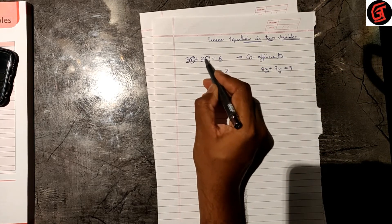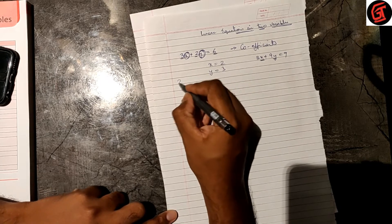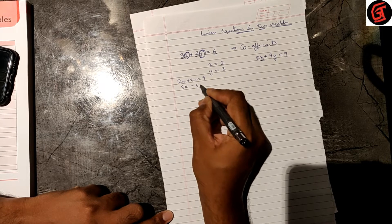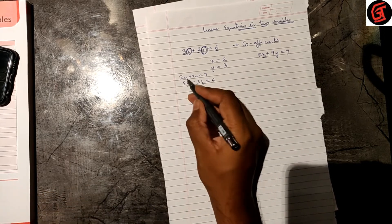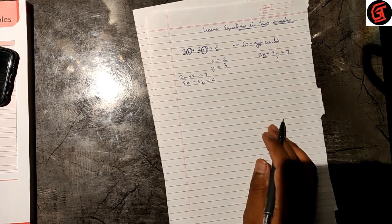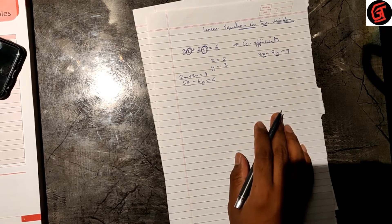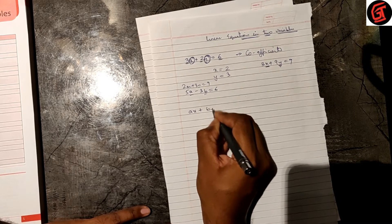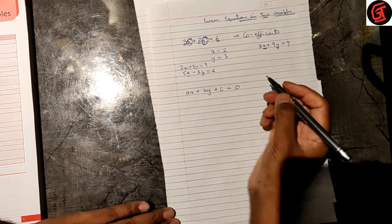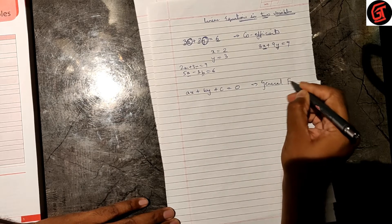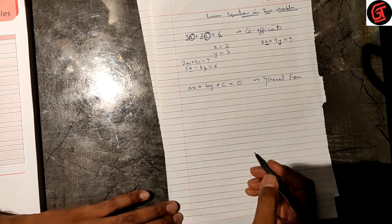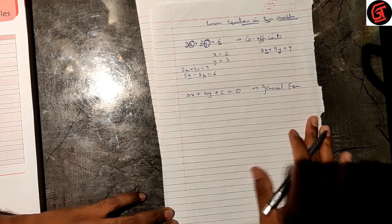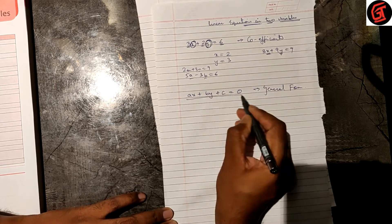That is the reason we say variables. Two variables means there are two different alphabets — it could be x and y, or 2m + 3n = 9, or 5a − 3b = 6. So a, b, m, n, x, y are all called variables. In general form we say ax + by + c = 0, and this is called the general form of a linear equation.